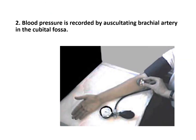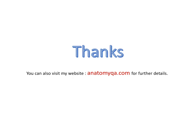Second, the brachial artery is one of the contents of cubital fossa, and blood pressure is recorded by auscultating the brachial artery in this fossa, as seen in this picture. Thank you for watching the video. For important questions and answers in anatomy, you can visit my website anatomyqa.com. I will put the link in the description.